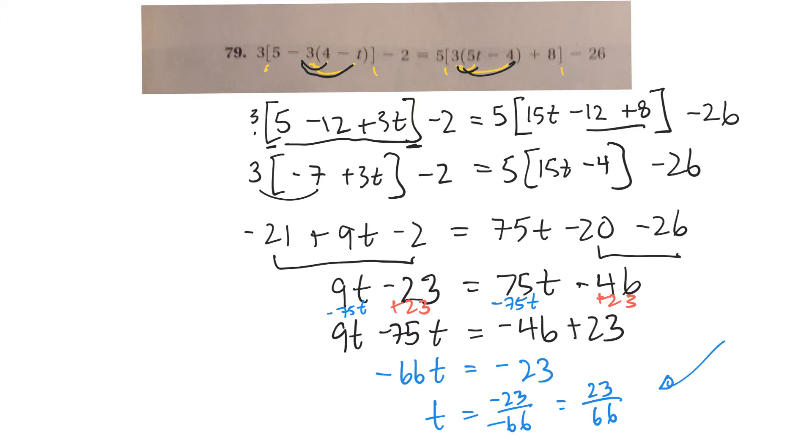Minus 12 plus 3t. That's right. 15t minus 12 plus 8. That's right. So it'll be negative 7. Minus 4. That's right. Minus 20. Minus 21 plus 9, minus 2. Minus 23. That's right. Minus 46. No, I'm thinking that I did everything right. Anyway, hopefully that helps with that one.